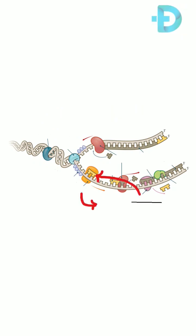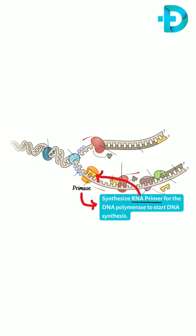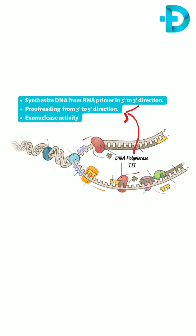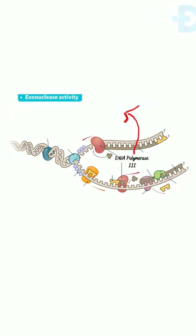Primase synthesizes RNA primer template for DNA polymerase to start working. DNA polymerase III synthesizes DNA from RNA primer template in the 5 to 3 direction, has proofreading, and exonuclease activity.